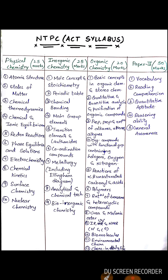The physical chemistry topics include atomic structure, states of matter, chemical thermodynamics, chemical and ionic equilibrium, redox reactions, base equilibria and solutions, electrochemistry, chemical kinetics, surface chemistry, and nuclear chemistry.